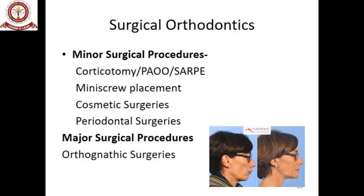Most adult orthodontics involves placement of mini screws, which is a separate chapter to be covered under implants and orthodontics. Other minor surgical procedures include cosmetic surgeries, such as botox injections to increase lip fullness where lips have become thin with age. Periodontal surgeries also fall into minor surgical procedures — in cases where recession is observed, assistance from a periodontist may be required to improve the periodontal condition.